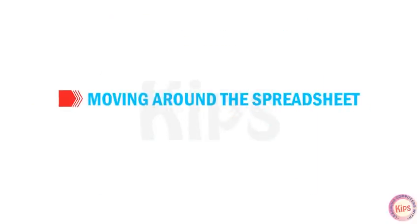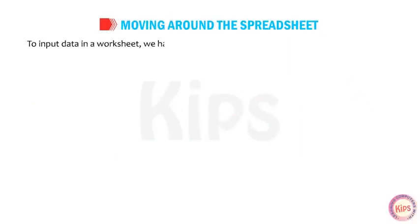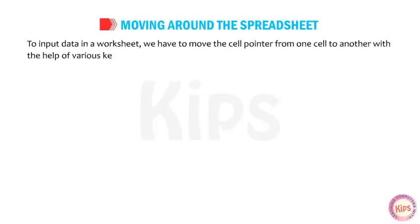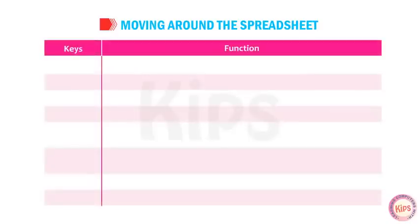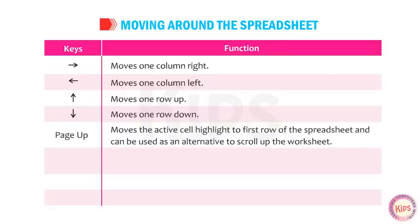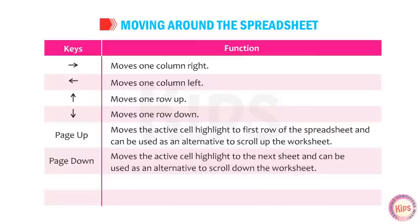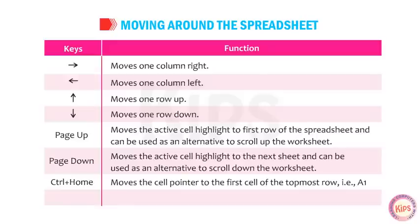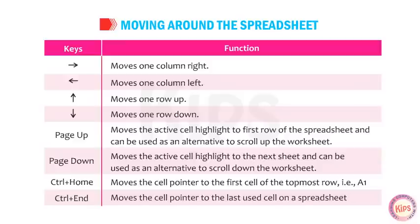Let us learn how to move around the spreadsheet. To input data in a worksheet, we move the cell pointer from one cell to another using various keys. The arrow keys move one column right, one column left, one row up, or one row down. Page Up moves the active cell highlight to the first row and scrolls up. Page Down moves to the next sheet and scrolls down. Ctrl+Home moves the cell pointer to cell A1. Ctrl+End moves the cell pointer to the last used cell on a spreadsheet.